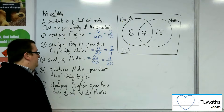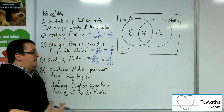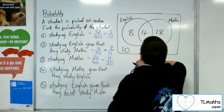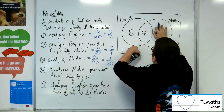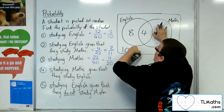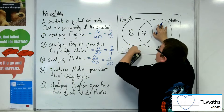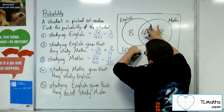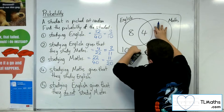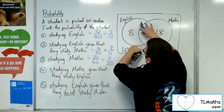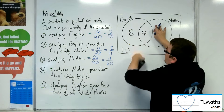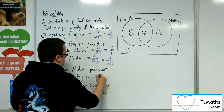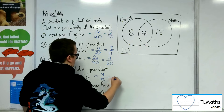If we're then asked studying maths given that they study English, we know they study English, so we can cover up anything that's not English. Then I'm asked what's the probability of choosing someone who studies maths? Well, there are 4 maths students out of the 12 who study English. So it's 4 out of 12, which is 1 third.